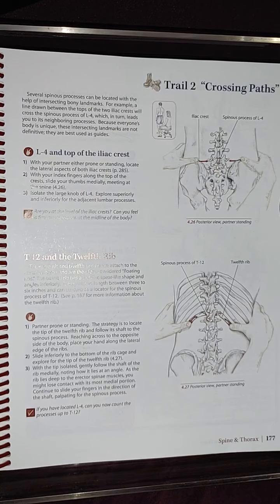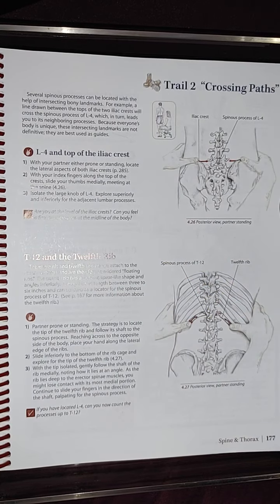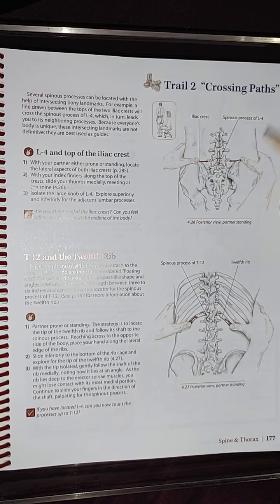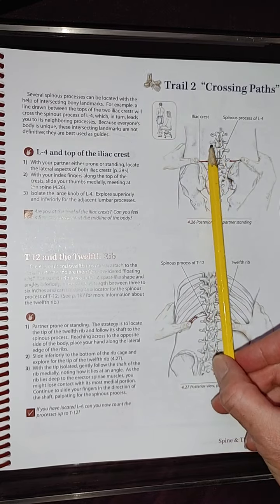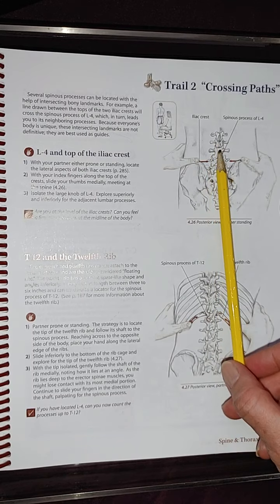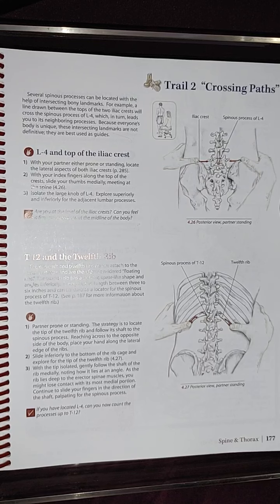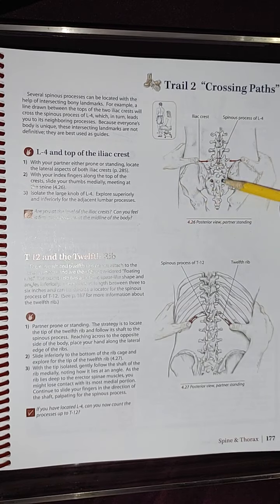Isolate the large knob of L4. Explore superiorly and inferiorly to the adjacent lumbar processes. To confirm this: are you at the level of the iliac crest? Can you feel a firm protuberance at the midline of the body? The spinous processes are the midline protuberance — this is the ridge line in the middle. I did a video addressing the type of protruding that's happening — it's either pointing down or downwards. That's the spinous process.